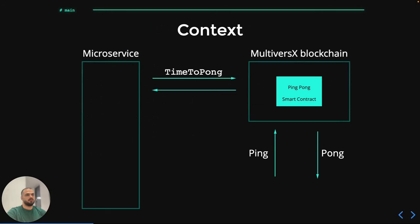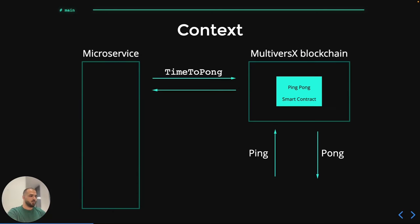The context of the presentation is the following. We have a PingPong microservice and a PingPong smart contract deployed somewhere on the blockchain. With the PingPong smart contract we can do the following things: we can send a Ping transaction to it containing a certain amount of eGold, after which we need to wait some time — 180 seconds. At the end of this waiting time, we can send a Pong transaction to the smart contract, which will send back to us the initial deposit sent using Ping.